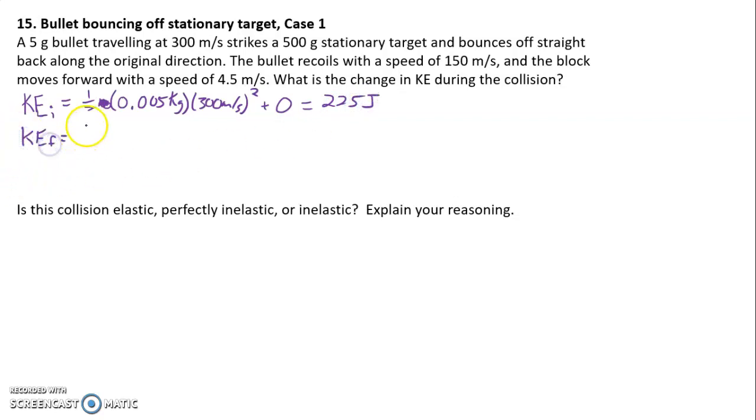After the collision, we have two separate things. The bullet is traveling at 150 meters per second, and the target is traveling at 4.5 meters per second. Now, we didn't have to solve for any of the velocities here, but that's because we did so previously. In a previous problem, we solved for this 4.5 meters per second. And so we get a value here of 61.3 joules.